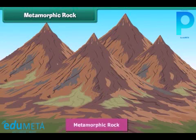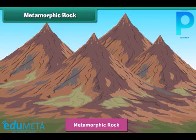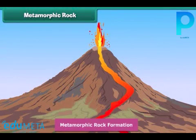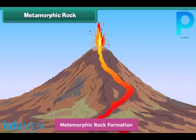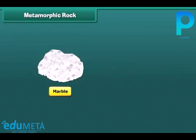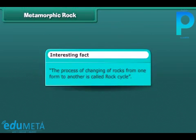Now we come to metamorphic rock. It is formed either from igneous or sedimentary rock. Igneous or sedimentary rocks are changed or get modified into metamorphic rock due to the influence of heat and pressure. This process occurs deep inside the Earth. Metamorphic rock is usually hard and often contains crystals. Marble and slate are examples of this kind of rock.